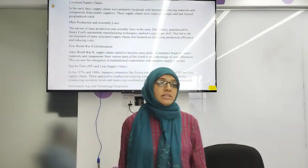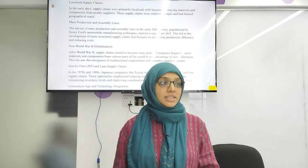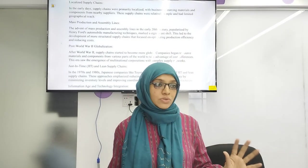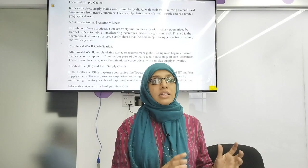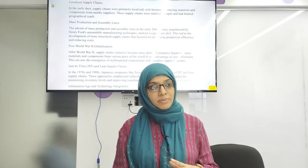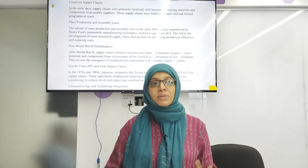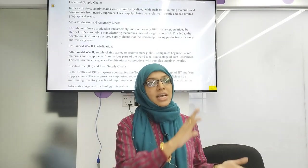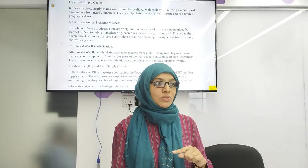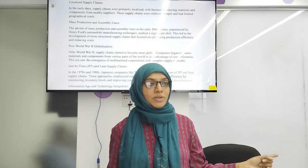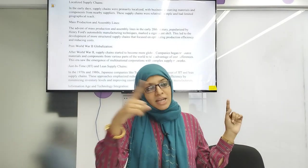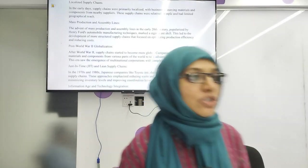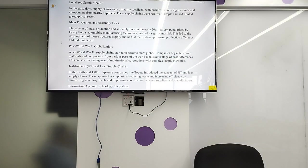Just-in-time ensures that the right product is delivered at the right time. In JIT, inventory is organized in bins: when the first bin is emptied in production, materials from the second bin are used, and a signal is sent to the supplier to replenish. This avoids excess storage costs. Without JIT, you would have extra inventory sitting idle, creating unnecessary storage costs that JIT aims to reduce.